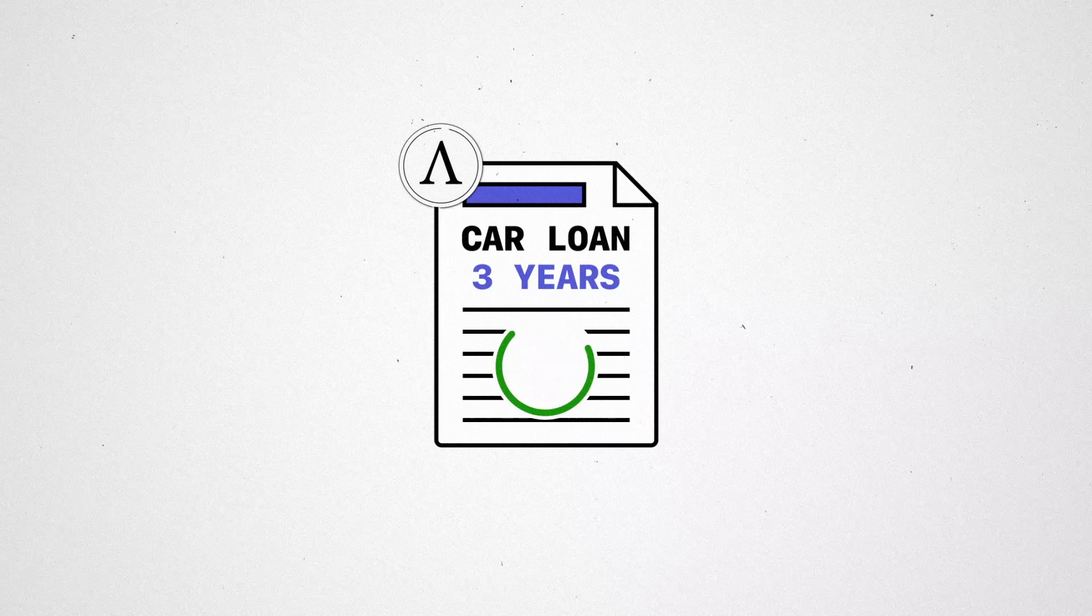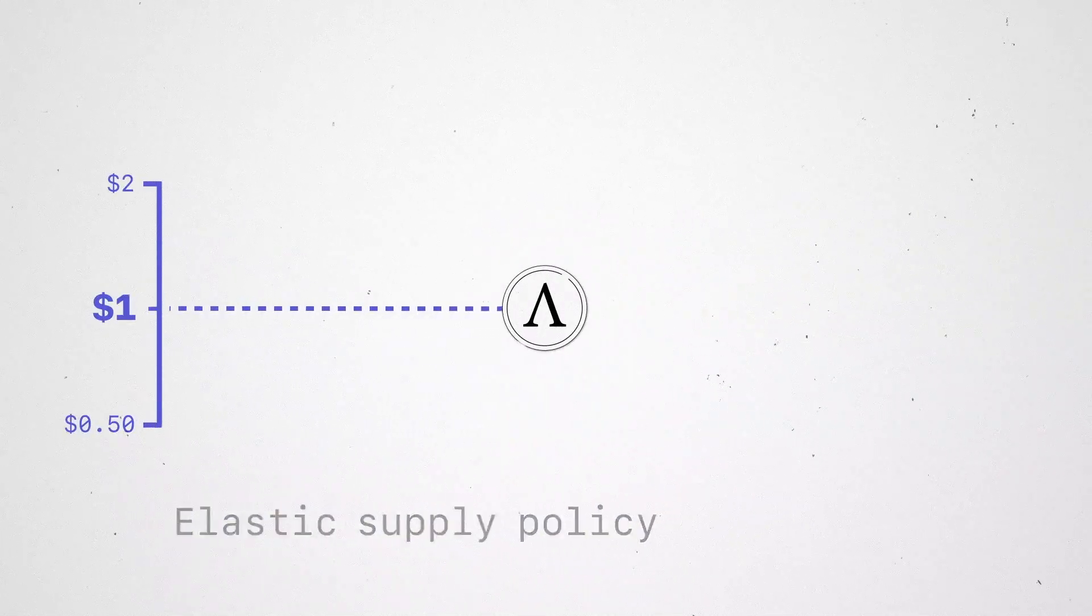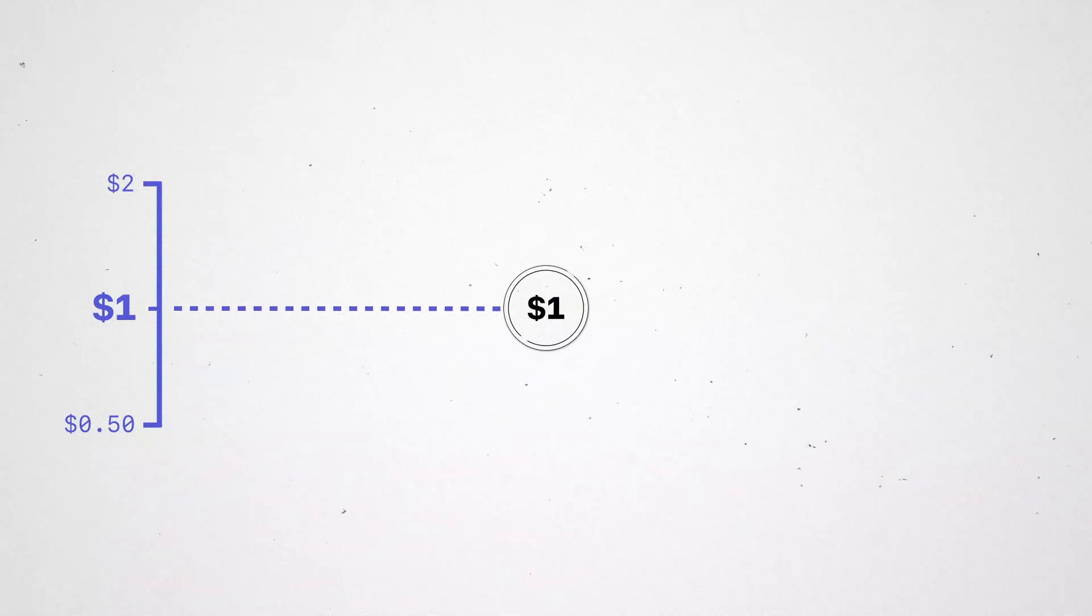The Ample, however, can be used to denominate contracts because it has an elastic supply policy that targets the price of approximately $1 per Ample.